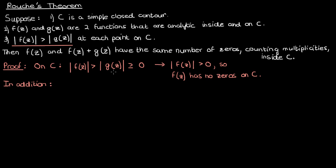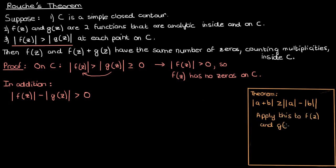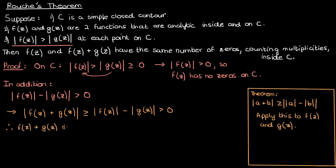In addition, since the modulus of f is positive and greater than the modulus of g, we can rearrange to say that the modulus of f minus the modulus of g is greater than 0. There's a theorem in complex analysis that the modulus of the sum of two complex numbers is greater than or equal to the absolute value of the difference of their moduli. If we apply this theorem to f and g, we find that the modulus of f plus g is also greater than 0, which means that f plus g also has no zeros on C.